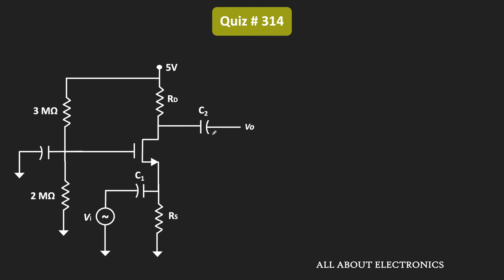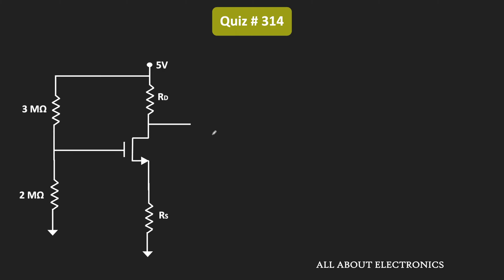For DC analysis, all coupling capacitors act as open circuits. We have been given that the power supplied by the 5-volt voltage source is 5 milliwatts, and the voltage divider circuit draws negligible current. So we can say 5 milliwatts equals 5 volts times ID, which gives us drain current ID equal to 1 milliampere.